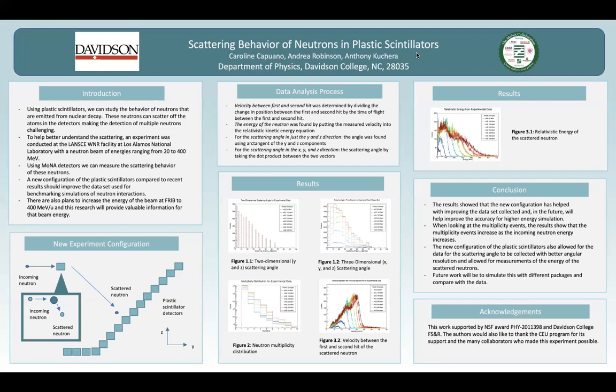For the velocity between the first and second hits of the neutron, we can observe that there are three bumps across the velocities that are consistent for the range of kinetic energies.